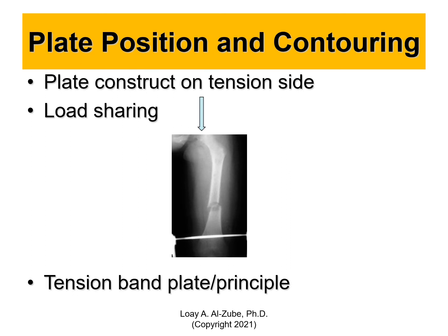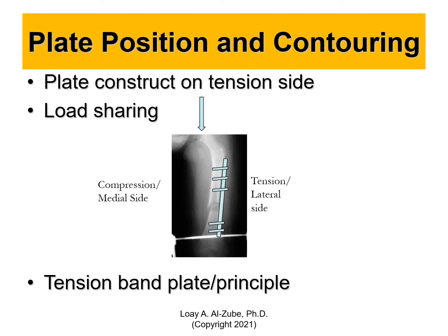Now, plate position. Where do you think bone is weaker — on the compression side or the bending side? The bending side. So whenever we have surgery, we put the plates on the bending side — the tension side — of the bone. Load sharing is good, but stress shielding is bad. If a plate takes the entire load rather than the bone itself, osteoclasts will start resorbing the bone — that's called stress shielding. So the tension band plate principle: we put the plate on the tension side.